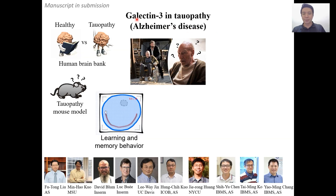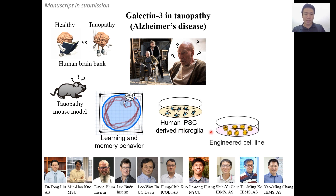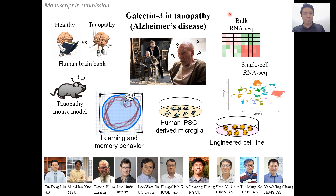We also furthered our study into tauopathies through collaborations. We have used multiple approaches, including the human brain of tauopathy patients, tauopathy mouse model, learning and memory behaviour, as well as human IPS-derived microglia, engineered cell lines, bulk and single cell RNA sequencing. From here, we have characterized the role of galectin-3 in tauopathies.